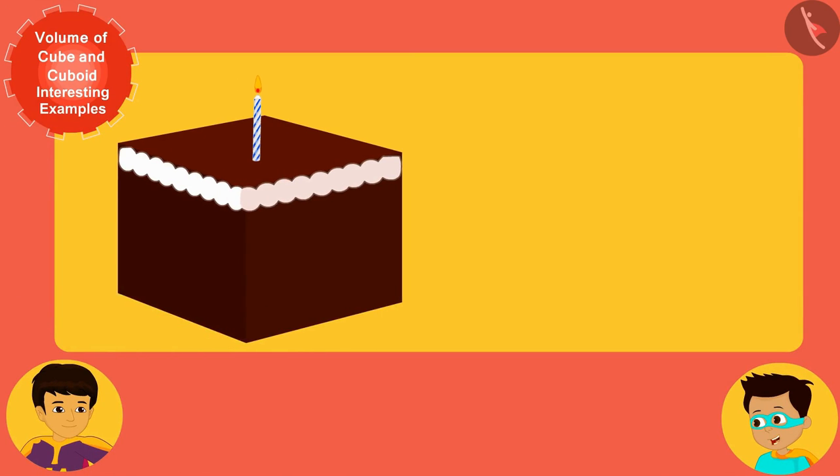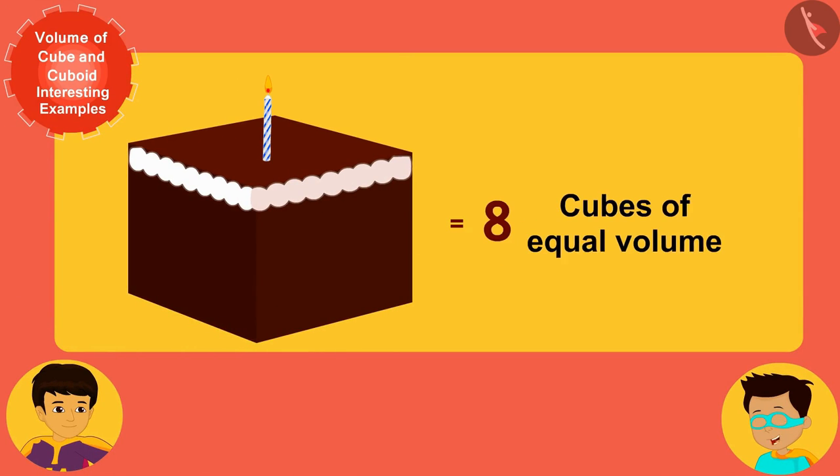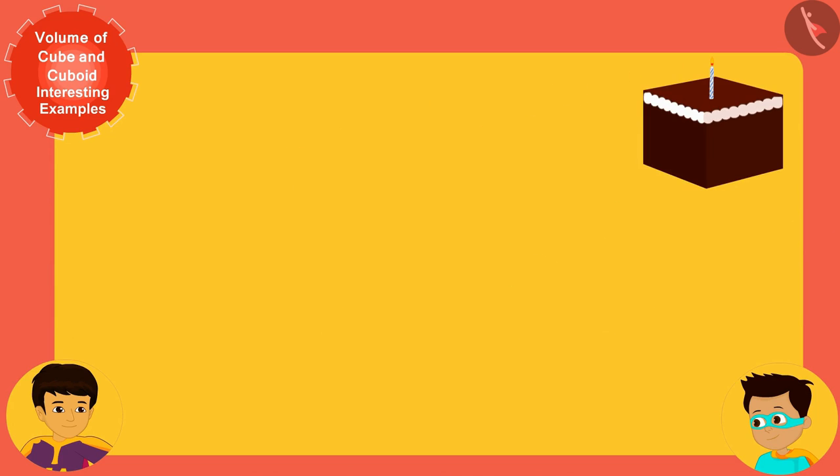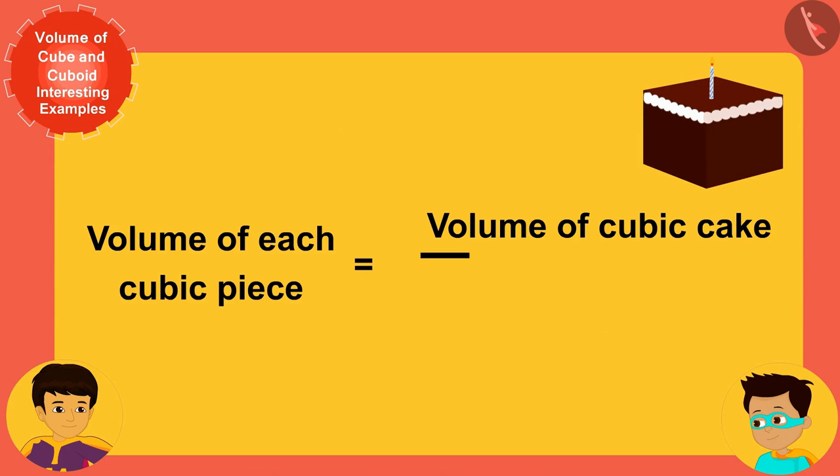Manas, because we are cutting this cubic cake into eight cubes of equal volume, we will firstly need to find the volume of each piece. We can then easily find the volume of each smaller cube by dividing the volume of this entire cubic cake by 8.